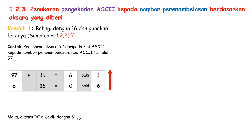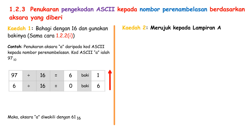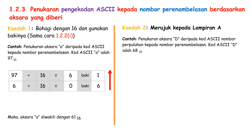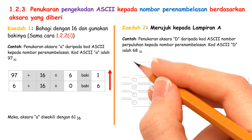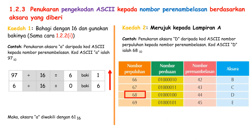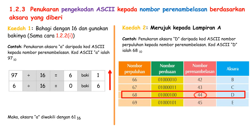Now, let us look at the second kaedah. The second kaedah is merujuk kepada Lampiran A. Example: convert the Aksara 'D' from code ASCII of a Nombor Perpuluhan to Nombor Perenamblasan. The code ASCII for 'D' is Nombor Perpuluhan 68. Therefore, the Aksara 'D' is Nombor Perenamblasan 44.